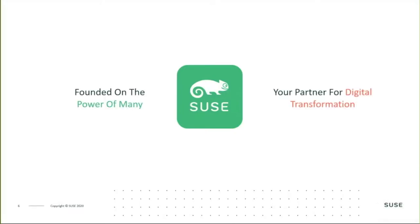SUSE was born from this concept — the power of many. At its core, its values are made up of its customers, employees, partners, and the development community. These define SUSE and the work we do through open collaboration and innovation. SUSE is the largest independent provider of open source software — a fully open source company. SUSE's vision is to be the leading, most innovative, and trusted partner providing true open source technologies for the enterprise to simplify, modernize, and accelerate traditional, cloud-native, and edge solutions.